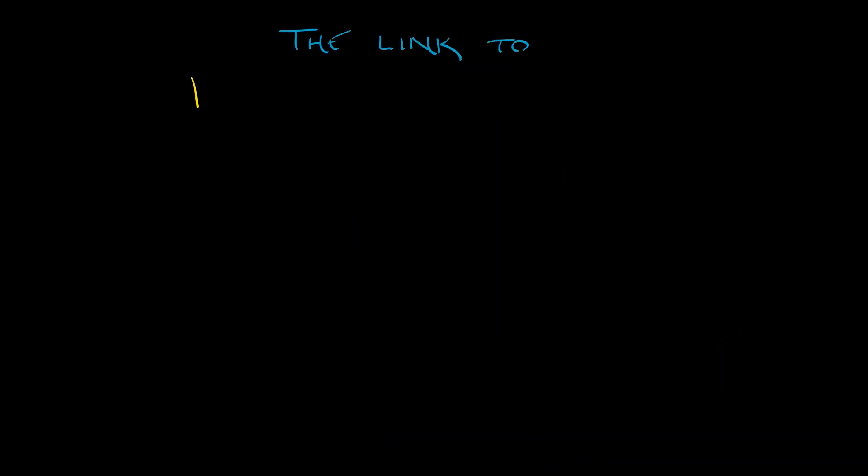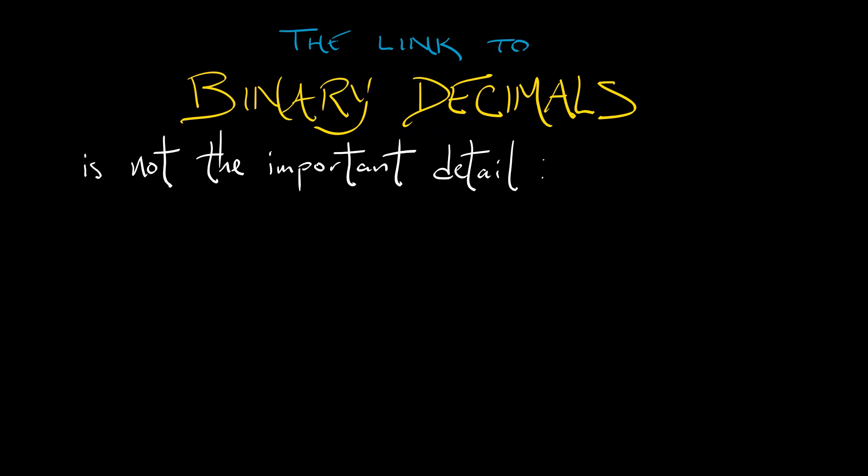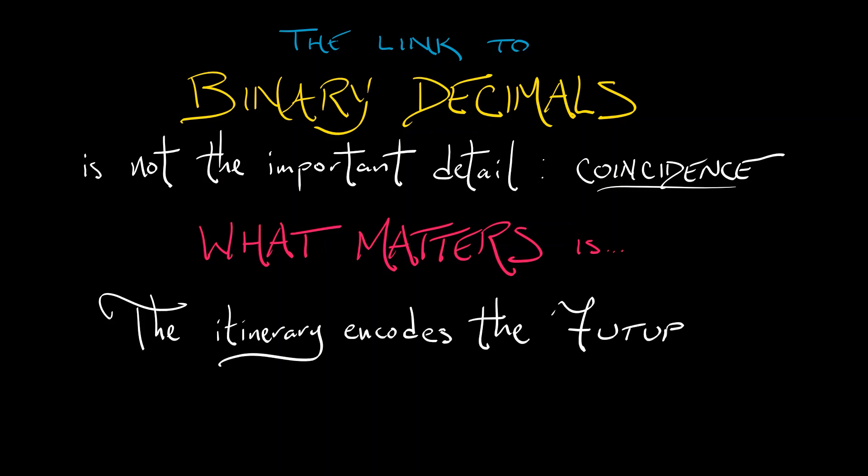The way that we set this all up in terms of binary decimals, well, that's not really the important thing. It's kind of a coincidence that is tailored to the fact that this map is a doubling map. It's not what really matters. What really matters is the way in which this itinerary encodes the future, that we've split up the interval into two regions, the 0 region and the 1 region. And just by keeping track of whether you're in 0 or in 1 at any particular time, that tells you how to construct your itinerary. And that, in turn, gives you a unique representation of your point in terms of these symbol sequences.